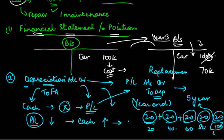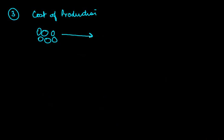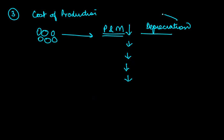So depreciation basically helps you to provide for the replacement of an asset. The third thing is cost of production. In order to produce various goods, you might be using plant and machinery. Every year because of depreciation, the value of plant and machinery keeps on going down. So depreciation which is provided on this plant and machinery is nothing but being incurred because you are producing certain units of goods.